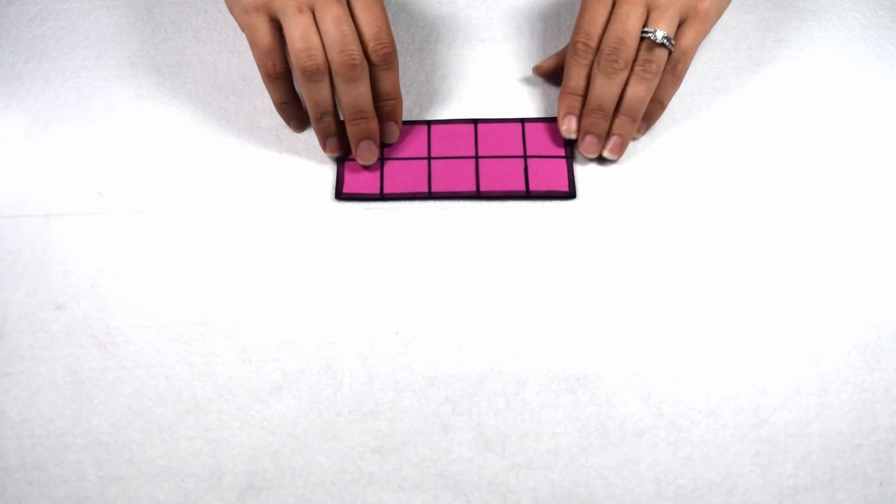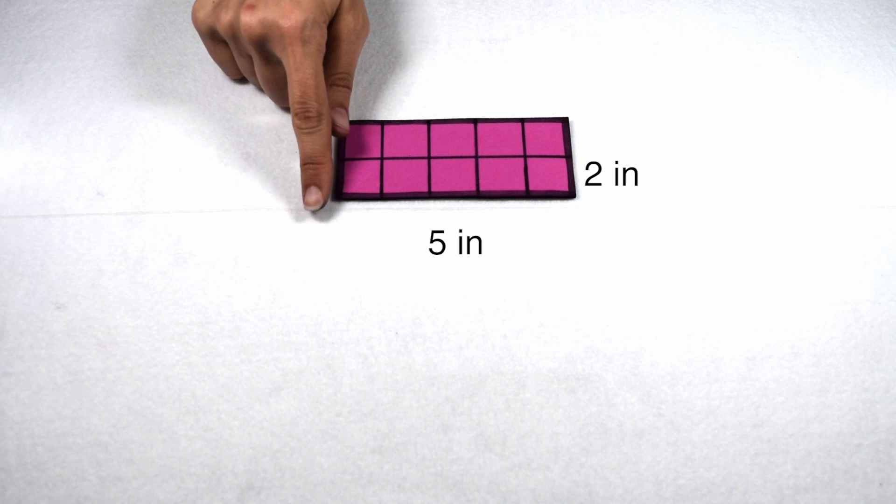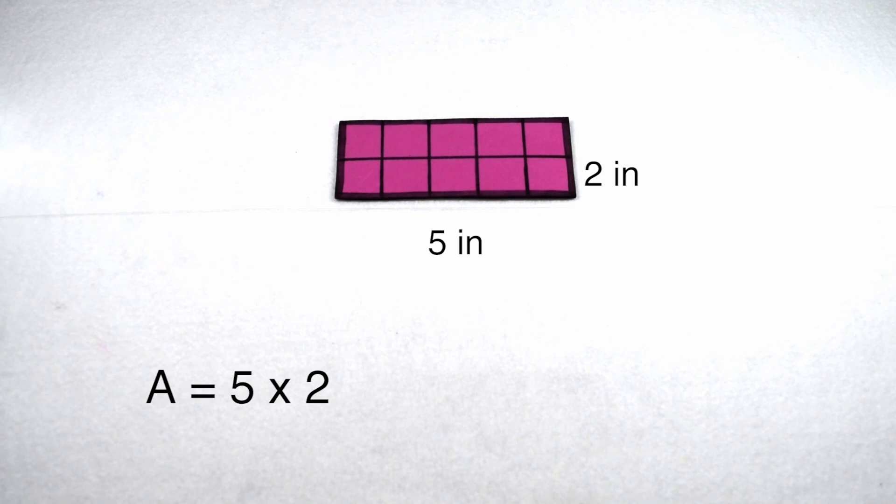We're actually going to start with a rectangle that has a base of 5 inches and a height of 2 inches. I know I can find the area of this rectangle by multiplying 5 by 2, so this rectangle has an area of 10 square inches.